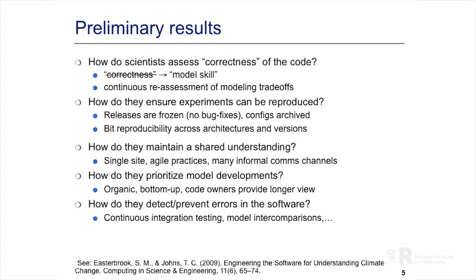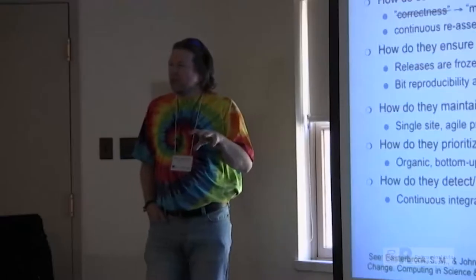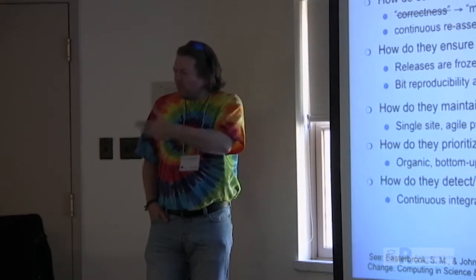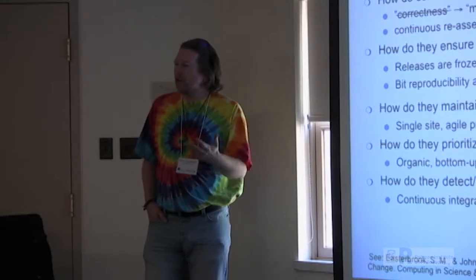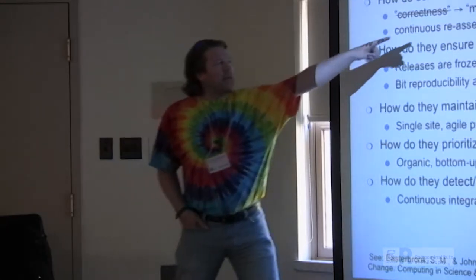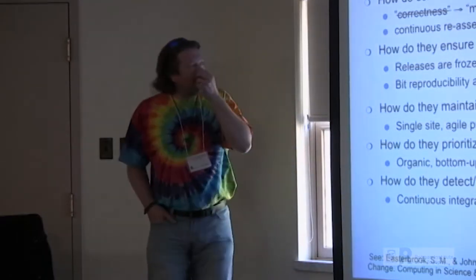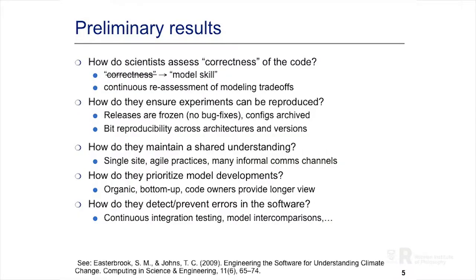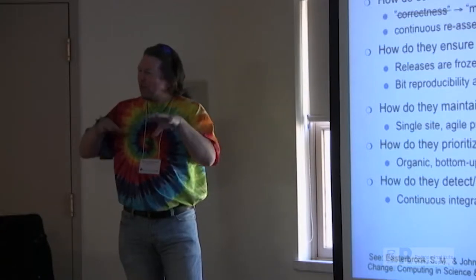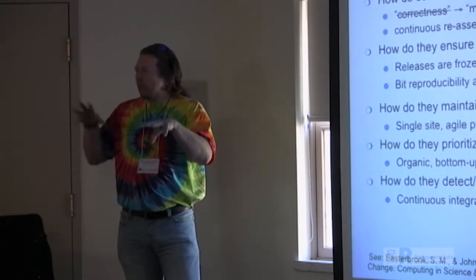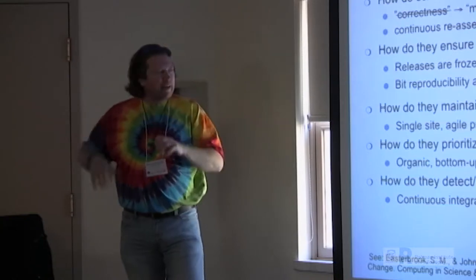And I can show you just some preliminary results. I want to pick out one in particular that jumped out at me, which is nobody in these labs talks about correctness of the code, because as soon as you ask them that question, they say, well, we know the models are incorrect. We know they're approximations. There's no such thing as correctness. The concept doesn't even apply. What they talk about is model skill. They're continually reassessing the trade-offs that go into these models on a day-to-day basis. Almost every meeting I sat in had some version of a discussion about the different trade-offs of what gets resolved in the model and what doesn't, and how do we balance those competing needs.